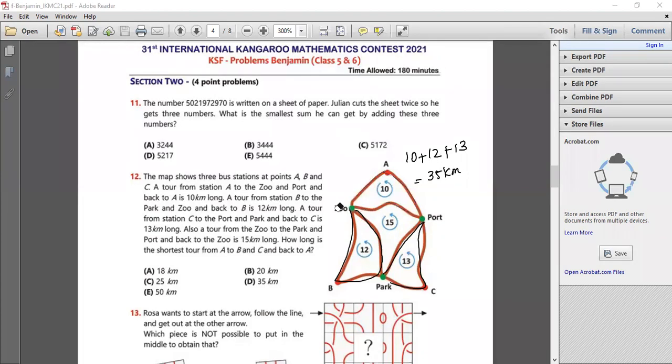Now in this particular thing if we see that this route is something that we don't want and this route is already given to us as 15 kilometers. So we will subtract the same. So I will get 20 kilometers.